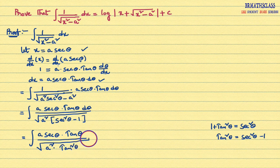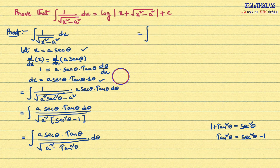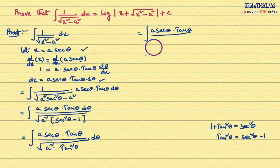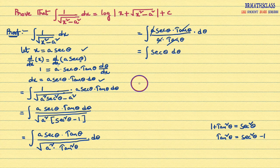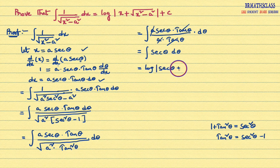Simplifying further: the integral of a secant theta into tan theta d theta divided by root of a squared into tan squared theta. Root of a squared is a, and root of tan squared theta is tan theta. So a and a cancel, and tan theta and tan theta cancel. What remains is the integral of secant theta d theta. We know this formula: the integral of secant theta d theta equals log mod secant theta plus tan theta plus c.